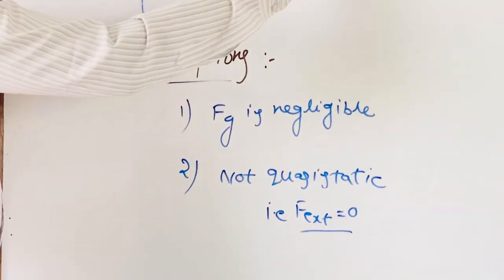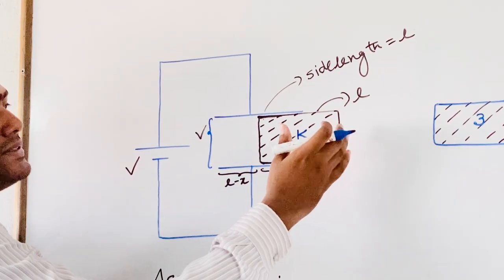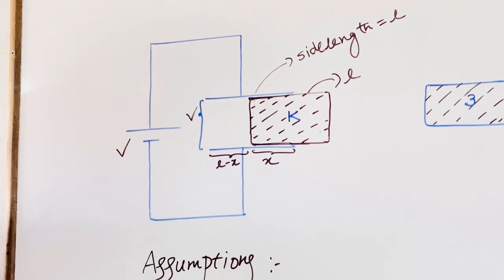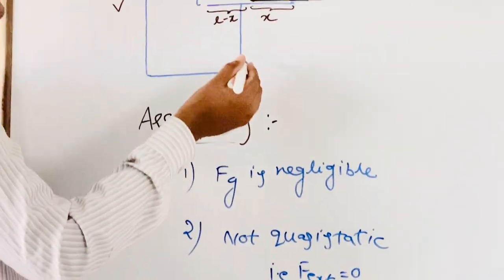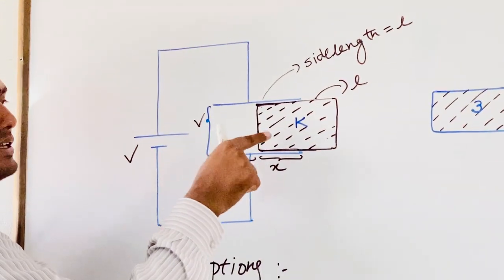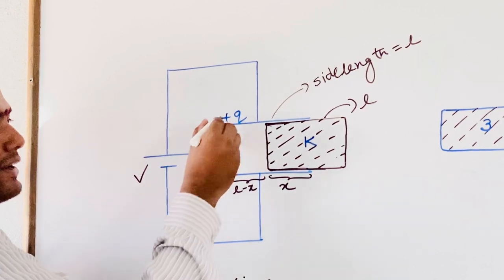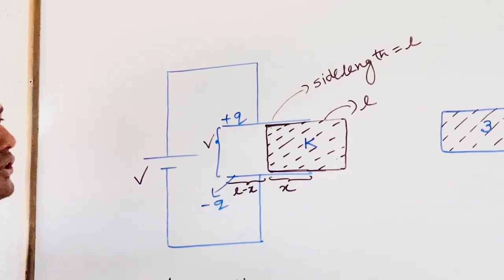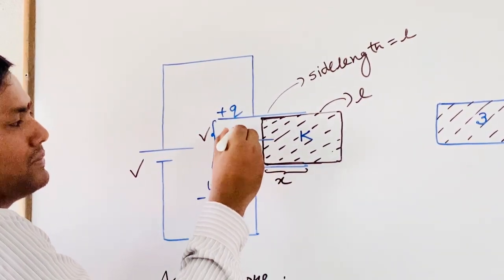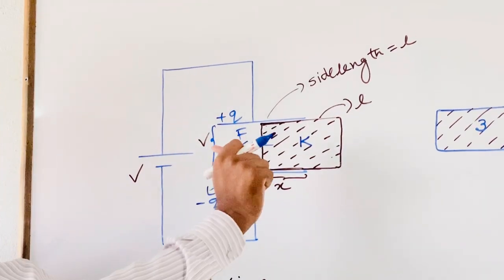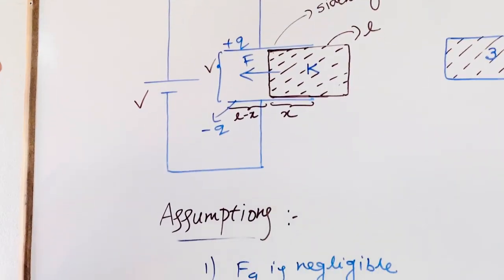You are simply holding this slab initially, then releasing it, so it exhibits free motion. We already know that whenever you introduce this dielectric slab, it experiences some force due to the free charges. Assuming this plate contains plus Q and the other contains minus Q, due to these free charges the dielectric slab experiences an attractive force in the leftward direction. This force is constant in nature.